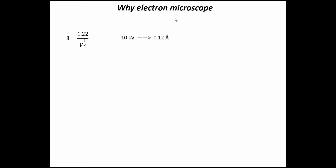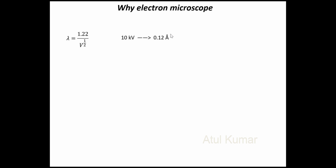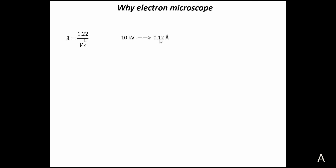Why do we require an electron microscope? If we just accelerate an electron with a certain voltage, we can alter its wavelength. The formula roughly is given by lambda proportional to the square root of V, where V is the accelerated voltage. So we can control its wavelength. The wavelength of the electron achieved is 0.12 angstrom.